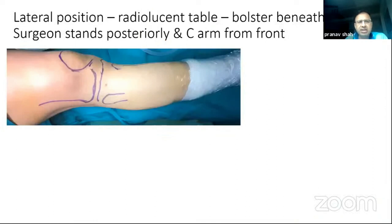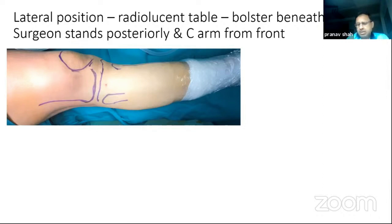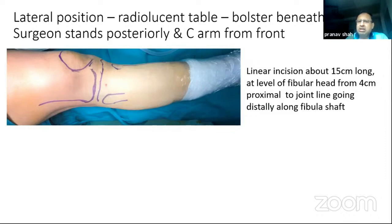The patient is in a lateral position and the anatomical landmarks have been marked. The head of the fibula is the most important landmark. As surgeons, we are standing behind the patient on a radiolucent table. There is a bolster beneath the knee to allow a varus strain so the lateral joint can be visualized better. The incision is a linear incision along the level of the fibula, starting four centimeters proximal to the joint line and going distally along the fibular shaft.